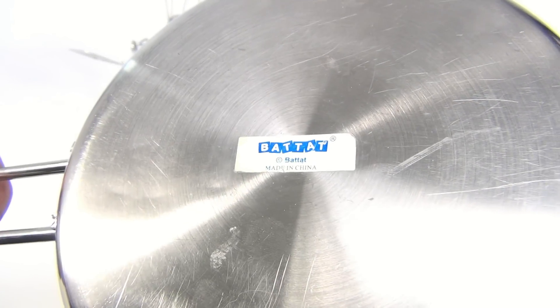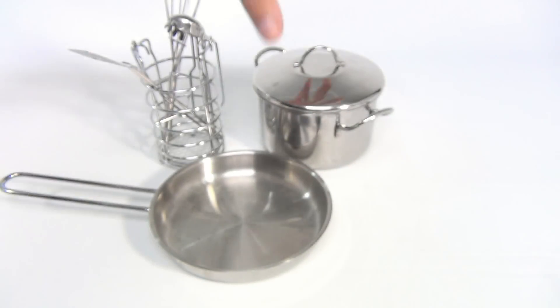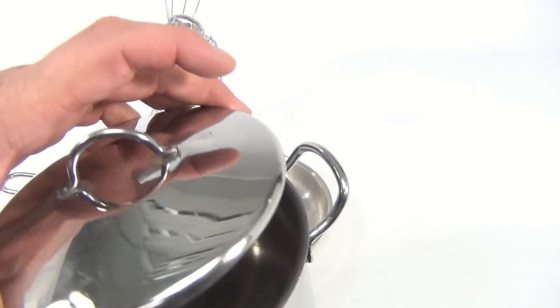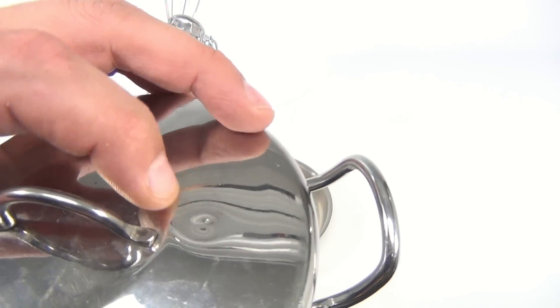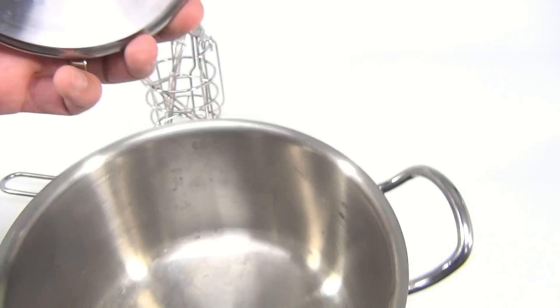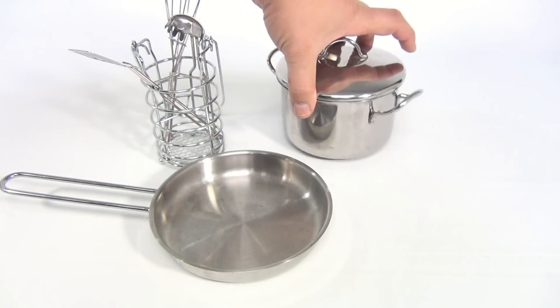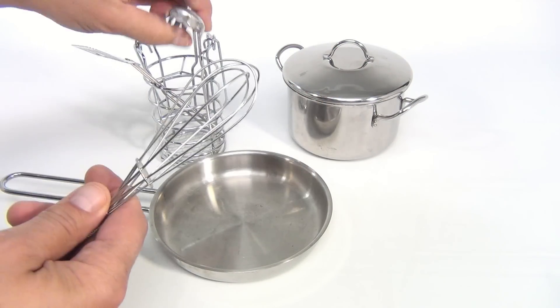This pan is labeled Bat Tat. Now the pot looks to be of the same quality but it doesn't have the sticker on the bottom. There's one little issue right here on the lid, but other than that it looks very nice. It's all very nice quality. We don't know if this originally came with the set, but it's also nice quality.